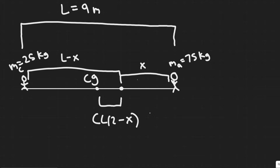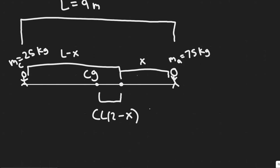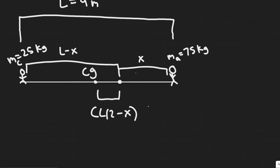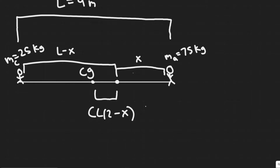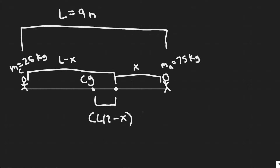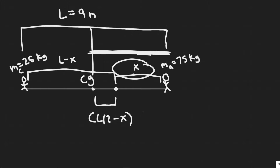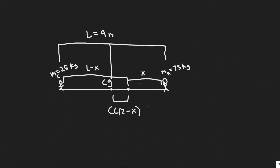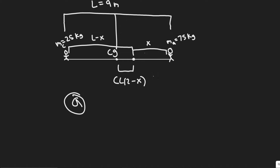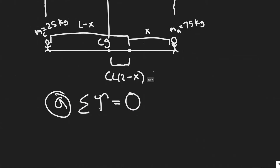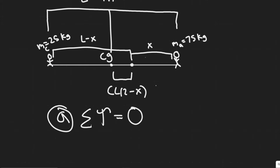For part B, the distance from the pivot point to the center of gravity of the board is L over 2 minus X, because the center of gravity of a uniform board is at its center, which is at L over 2. Subtracting X gives the distance between the pivot point and the center of gravity. Now that everything is labeled, we solve each part by summing the torques. The sum of the torques must equal zero because we want the board to be balanced and not rotating.